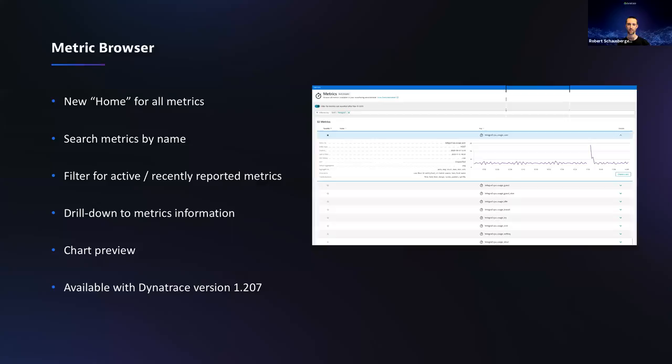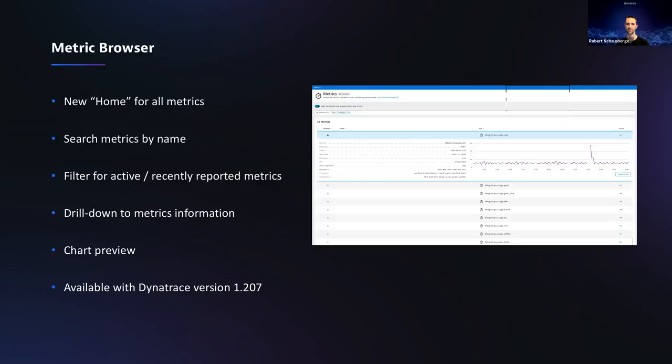A feature request came in: instead of just creating a chart, it would be useful to get the metric ID for a query — like a curl command to query this metric — directly from the browser. That's actually on the shortlist. A couple of interactions are planned: creating the curl command for use in Postman or command line, and creating an alert for customer alerting. There are a couple of items being built out from this browser.